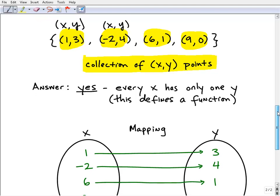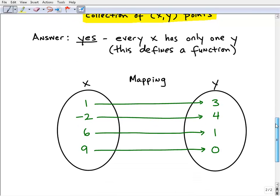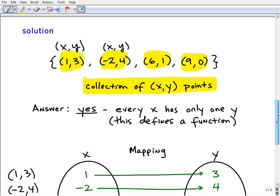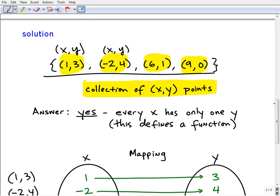So we can take a look at what we call a mapping diagram where we break up the X and Y points in this way. So (1,3) is the point 1,3, and then here we have the point (-2,4), (6,1), (9,0). Alright, so let's kind of go up here. You can see these are the points that we're talking about.